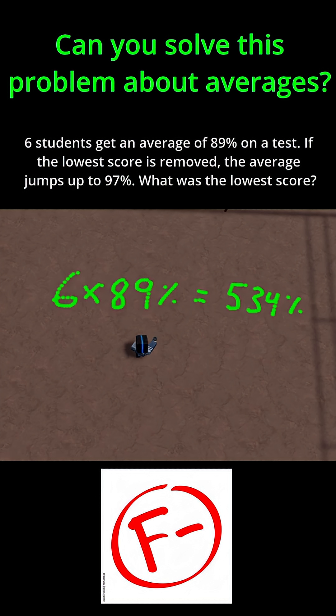Now, what I'm going to do is do the same thing with a 97% average. To do this, I'm just going to do 5 times 97%. And the reason I do 5 now is because I took away the lowest score. That's taking away one student's score from this data set. So now we go from 6 to 5. So 5 students average a 97 on this test. And if I do that, that ends up being 485%.